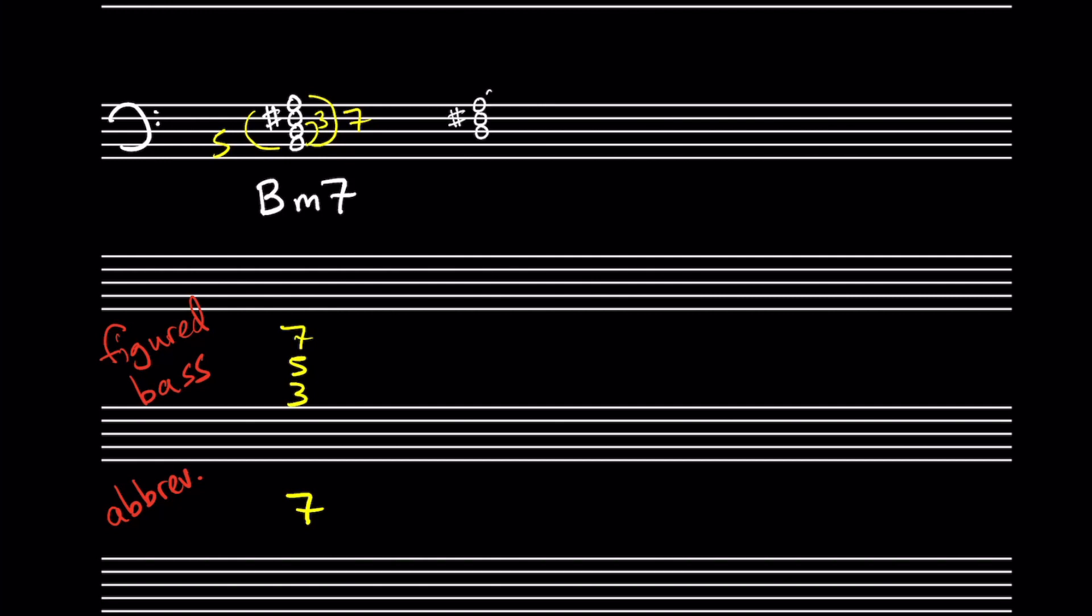A first inversion B minor seventh chord has the chord third in the bass. The third is D, so the lead sheet notation would be Bm7 slash D. The full figured bass here is 6-5-3, but we abbreviate that to just 6-5.